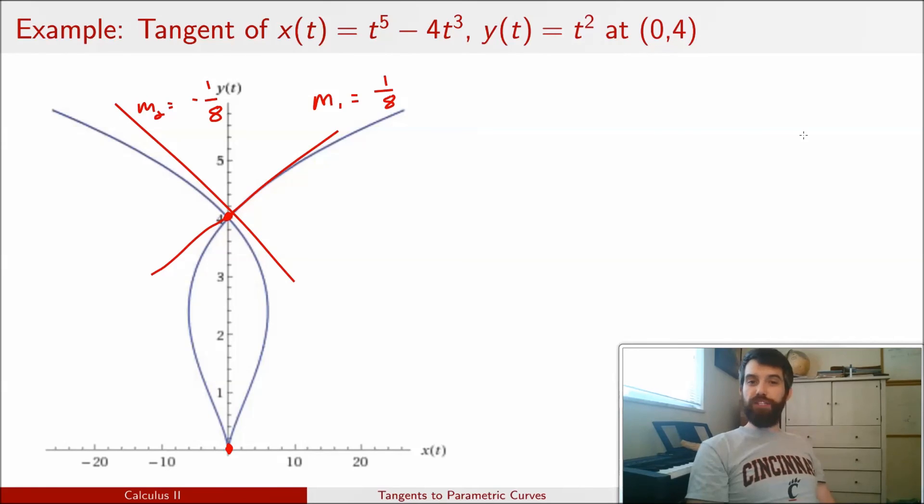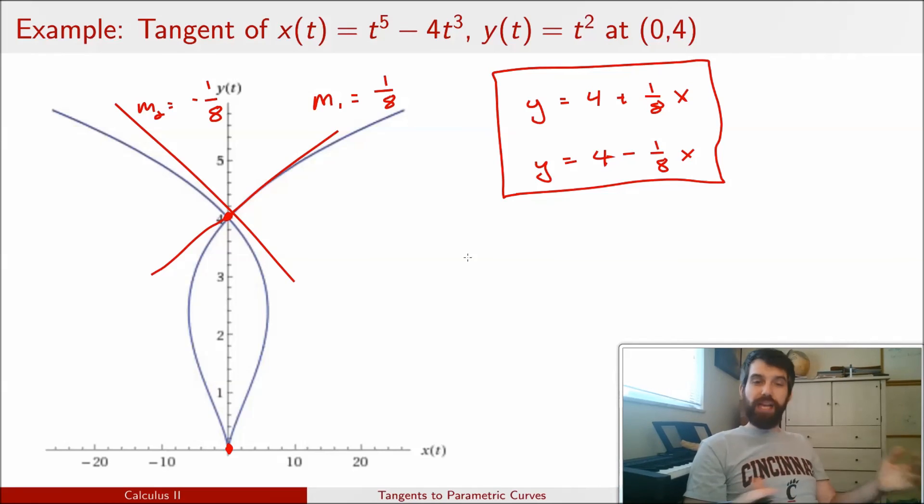If I wanted to go beyond just writing down the slopes and I wanted to write down the equations of the tangent lines, I would say y minus 4, which I'll move the 4 to the other side, so y is equal to 4, and then plus the slope 1/8 times x, or alternatively y is equal to 4 minus 1/8 times x. So this is our standard form for our equations of tangent lines, and we get two of them because there were these two different t values that got to the same x,y coordinate. So the tangent line at that x,y coordinate has the two different possible cases, and there they are.